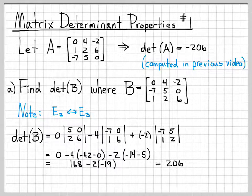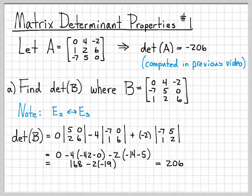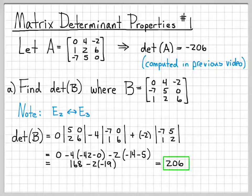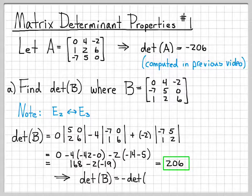Negative 2 times negative 19 simplifies, giving us a total of 206. So that's interesting. Previously, the determinant of A was equal to negative 206. The determinant of B I've computed and it's equal to 206. So for this particular example, we've just found that the determinant of B is equal to the negative of the determinant of A.